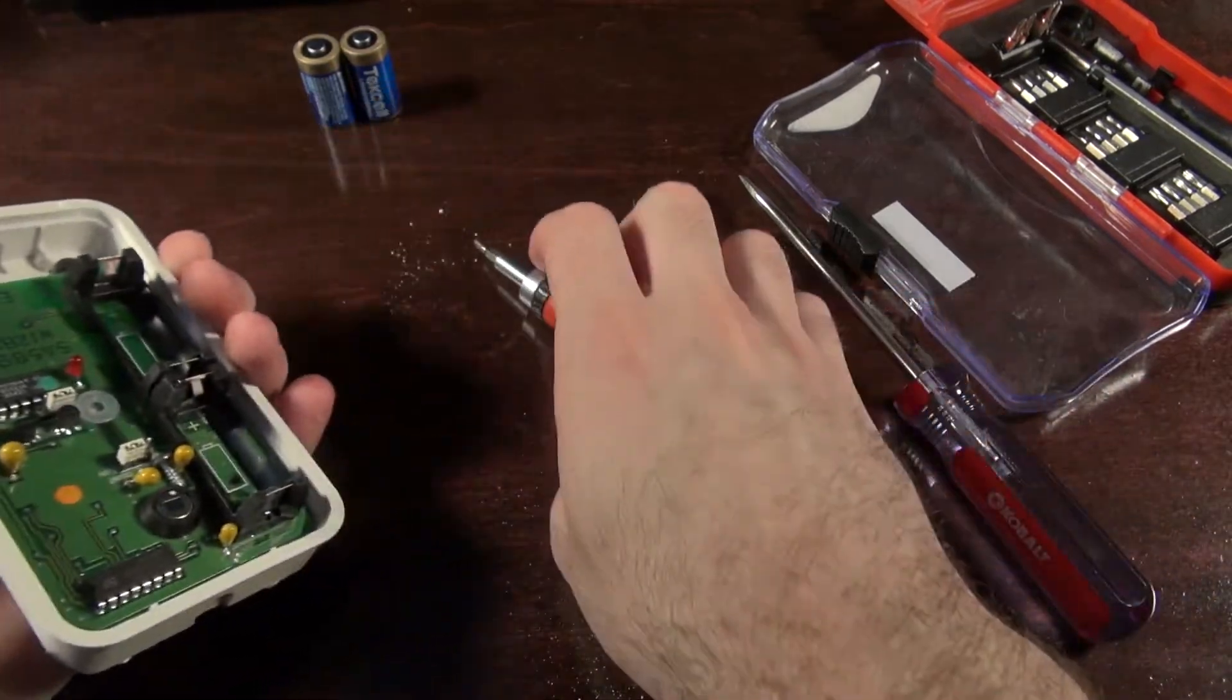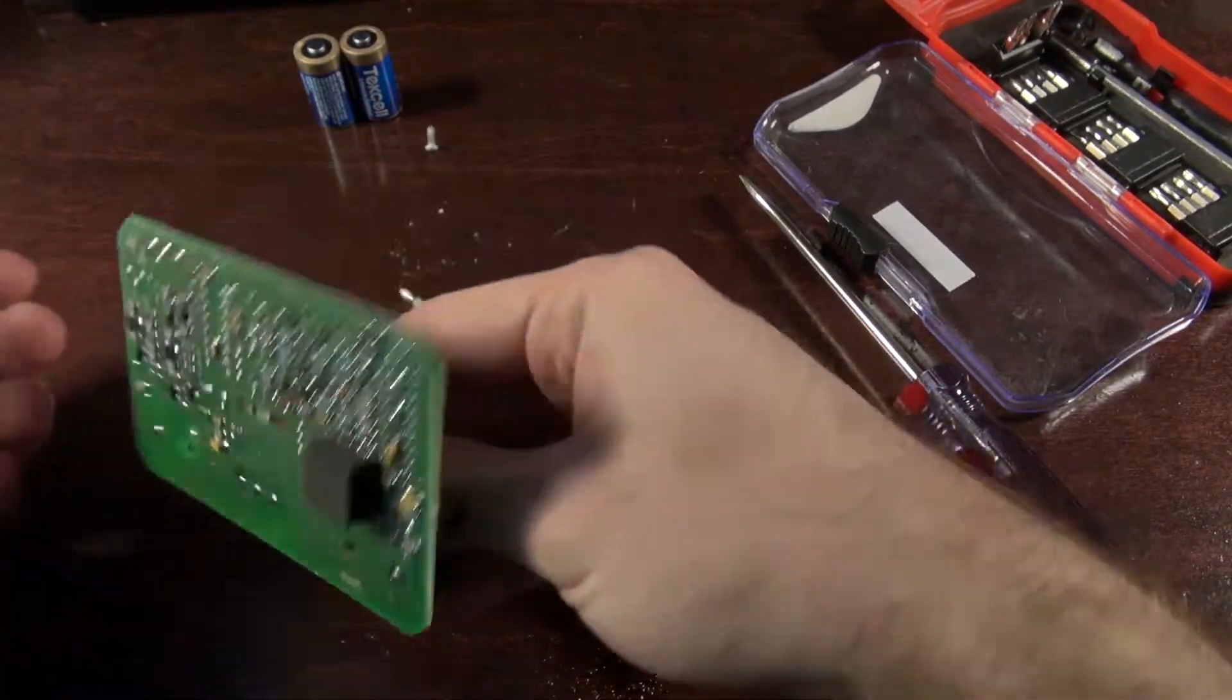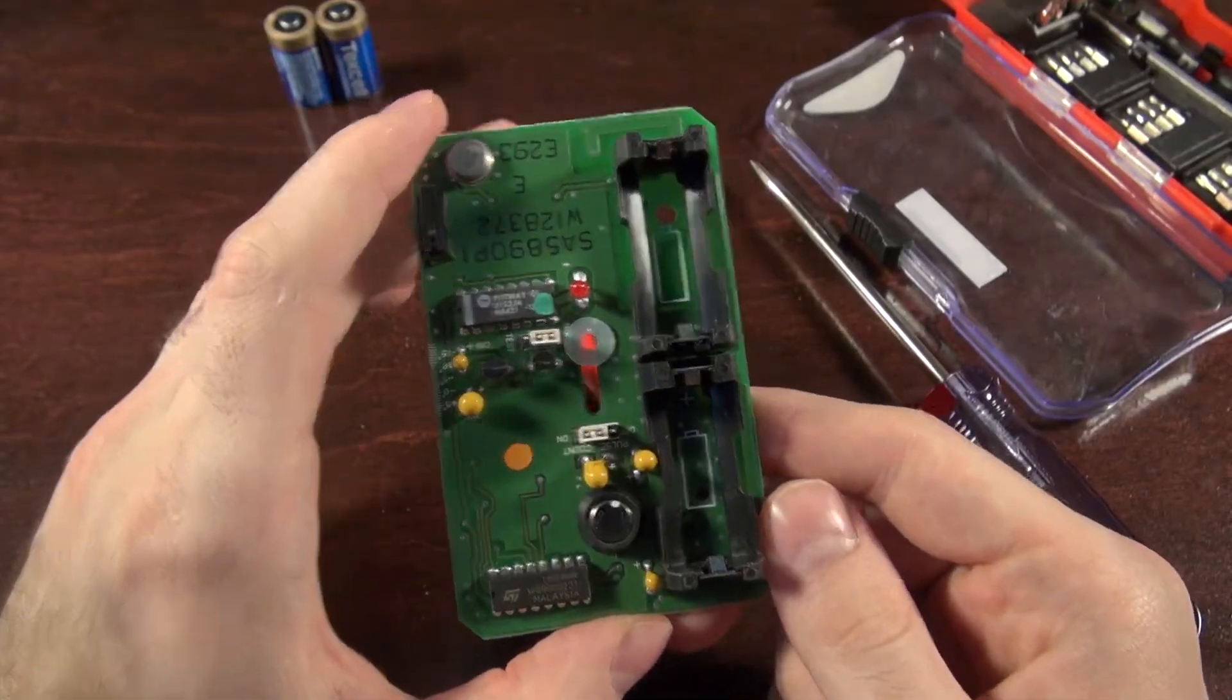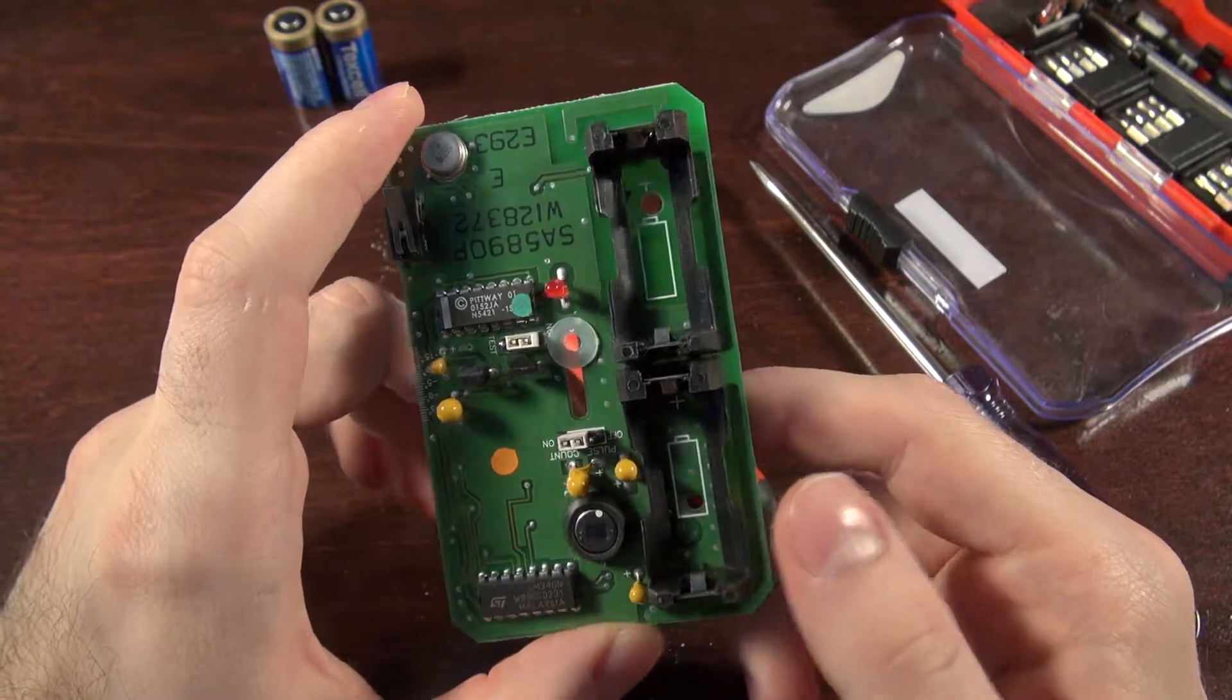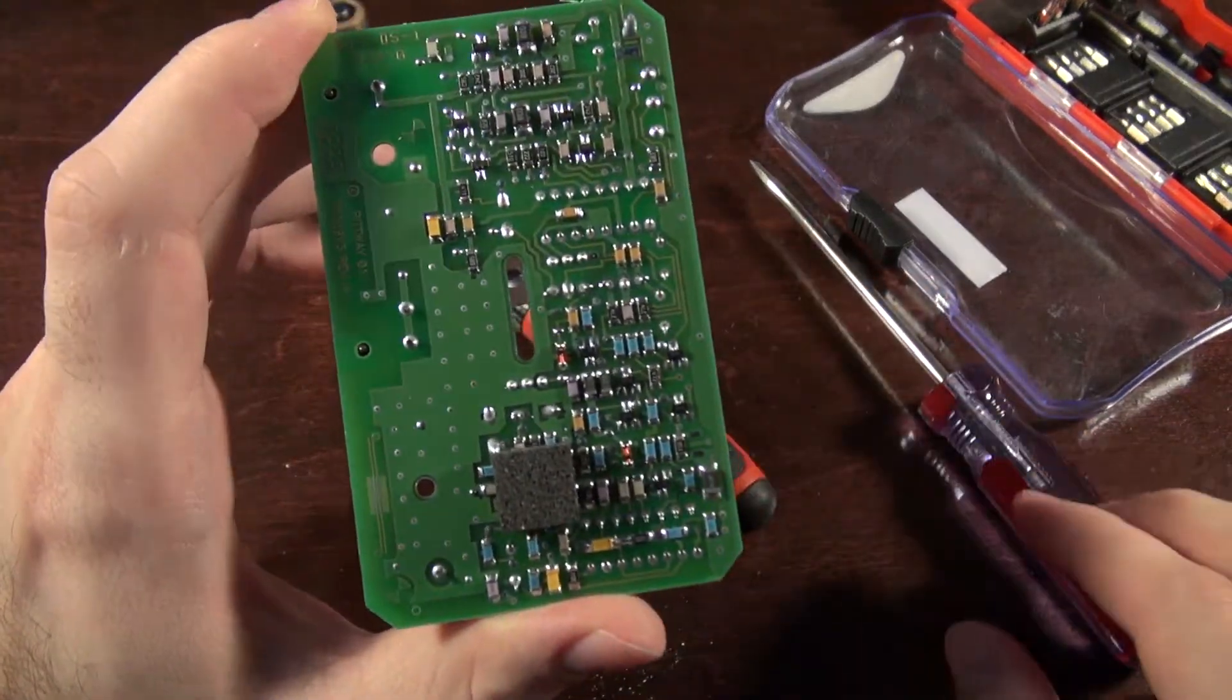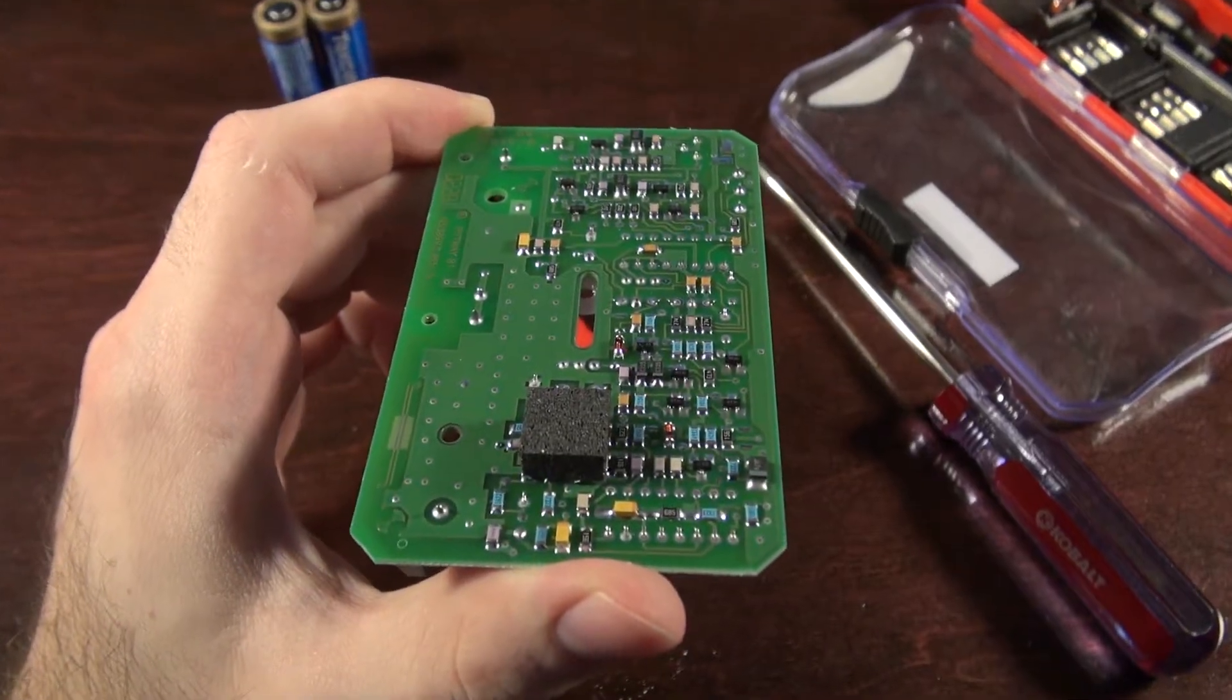I wonder if these have to be precisely calibrated in the jig or not. These are awful screws. Based on the fact that they're using through-hole stuff, I wonder if this is a fairly old unit.